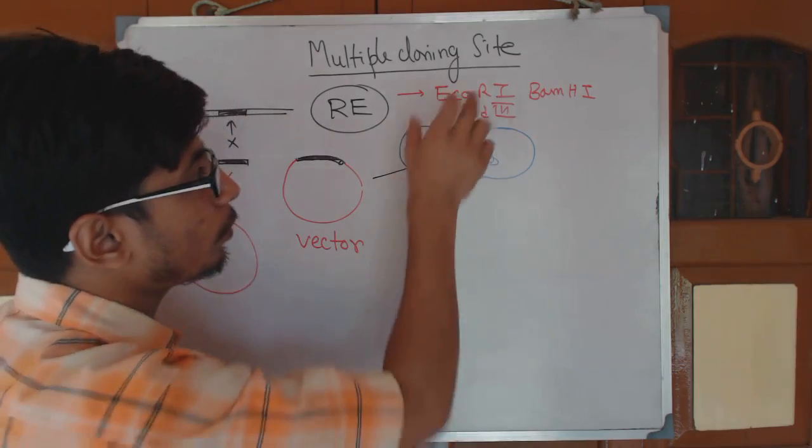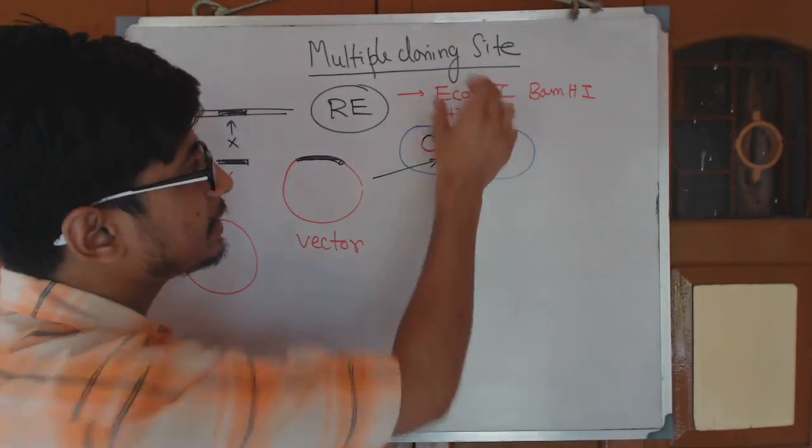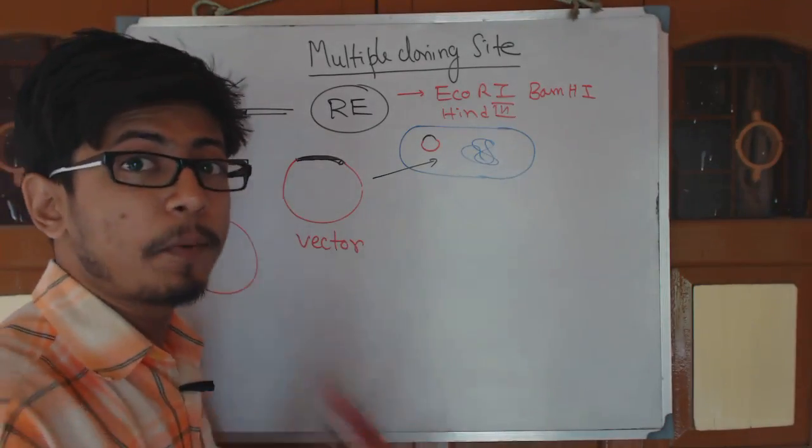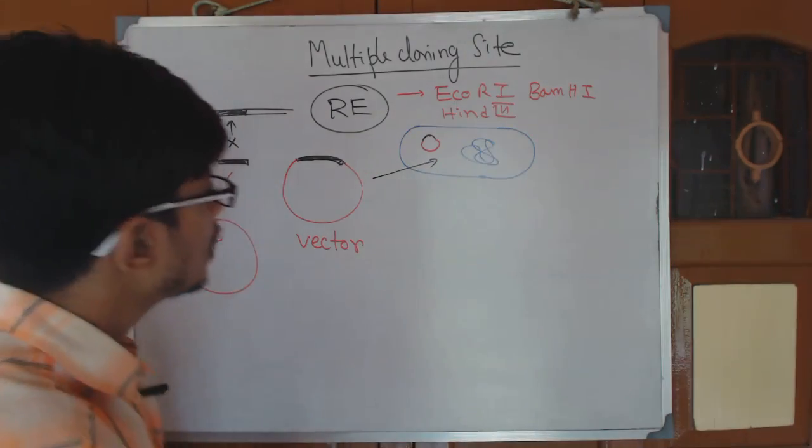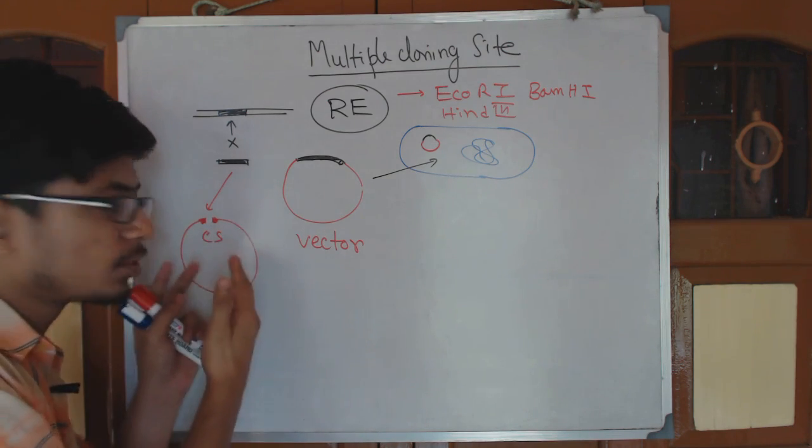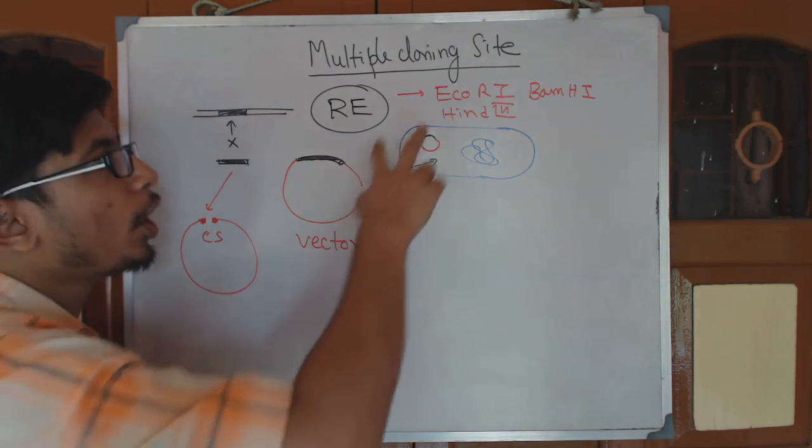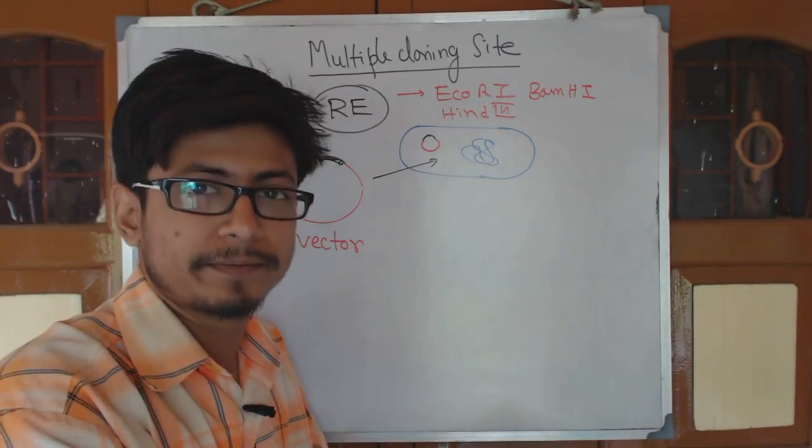When we treat it with ECO-R1, we will be very sure that this is going to cleave at a specific point only, not any other points. This cloning site actually consists of many restriction endonuclease cleavage sites.